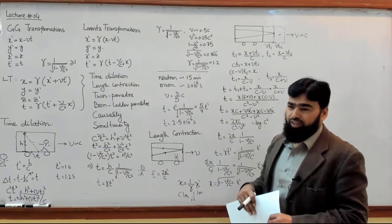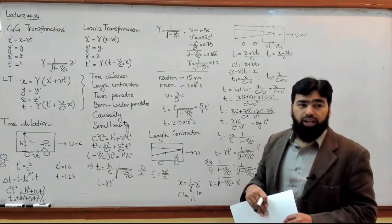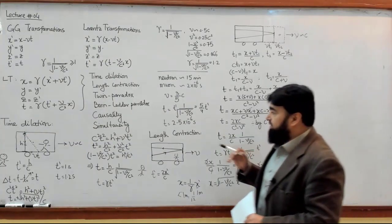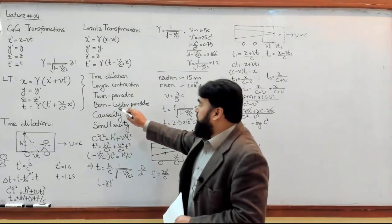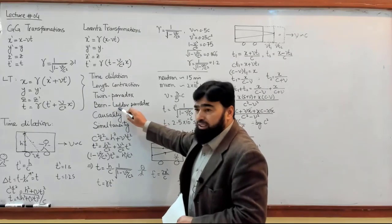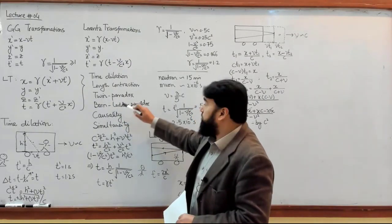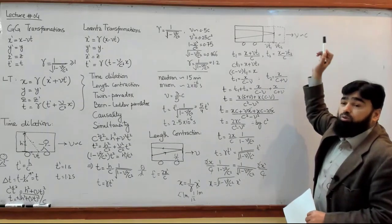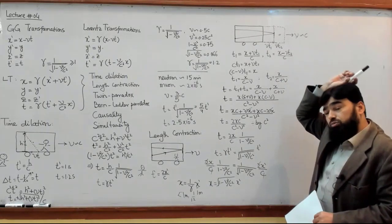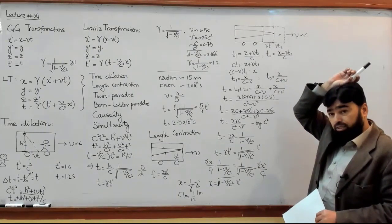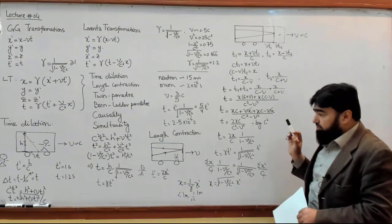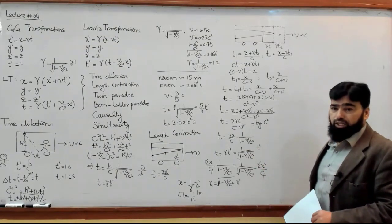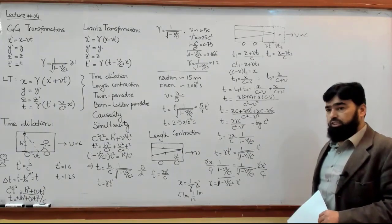We don't have a measurable-sized object that we can move close to the speed of light, and that is why we do not observe length contraction in everyday life. Elementary particles resolve the issue of time dilation, but length contraction is yet to be confirmed experimentally.